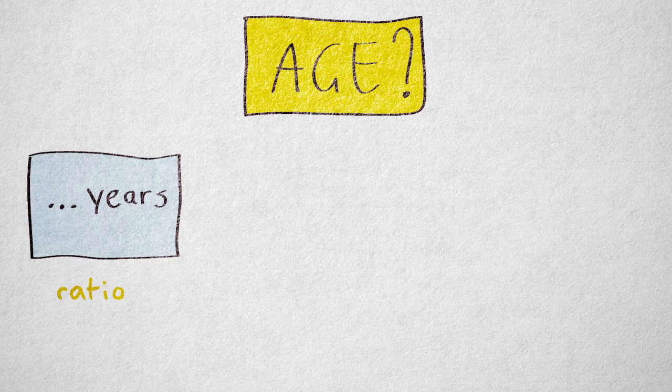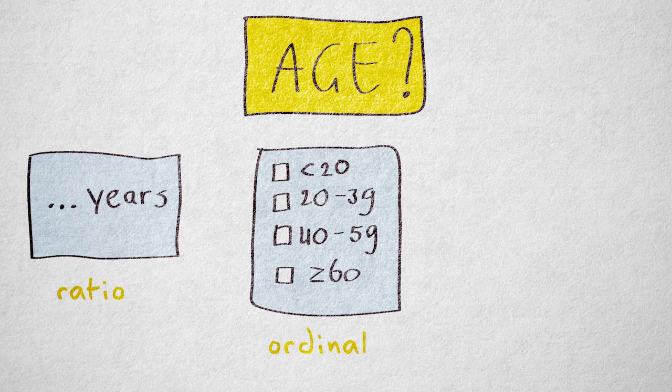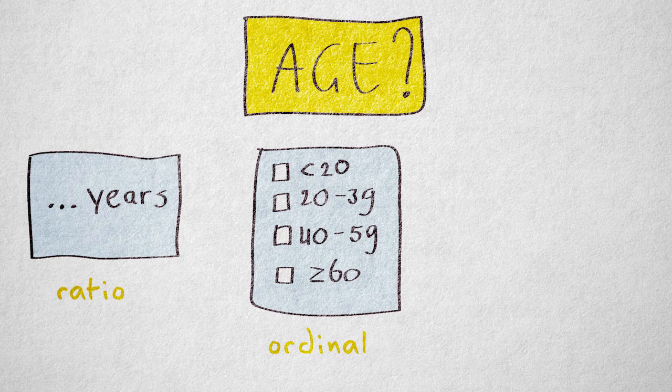I could also ask them whether they are under 20, 20 to 39, 40 to 59, or 60 or older, assigning the scores 1, 2, 3, and 4. By creating age categories, we no longer know exactly how old someone is.